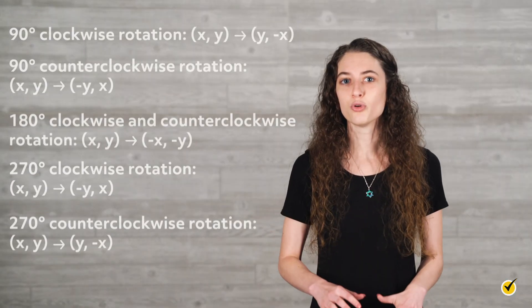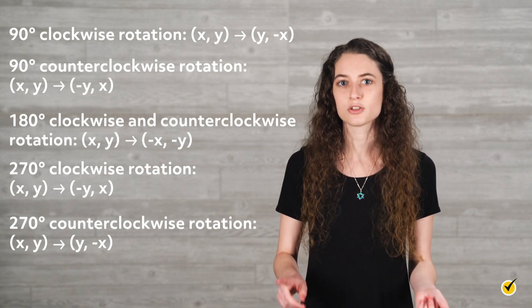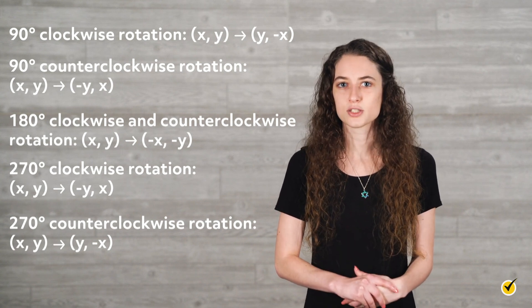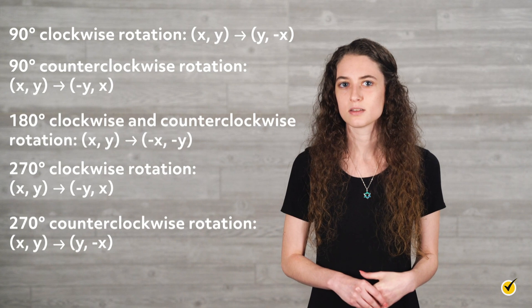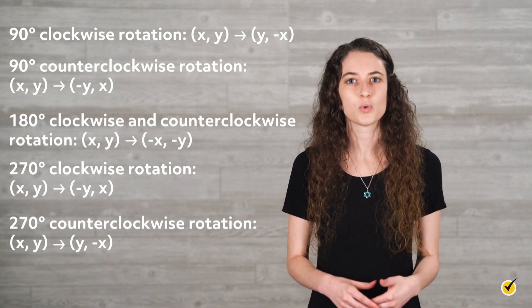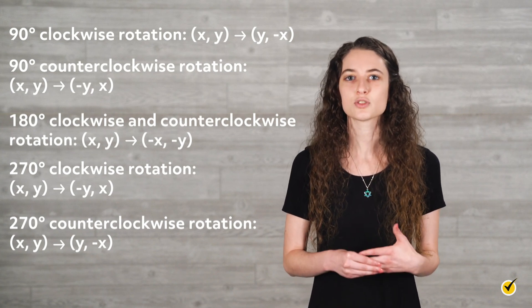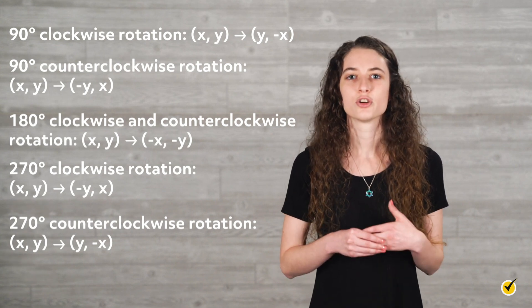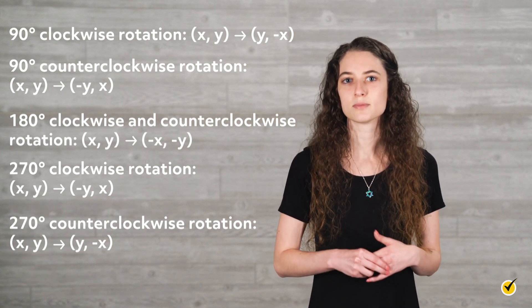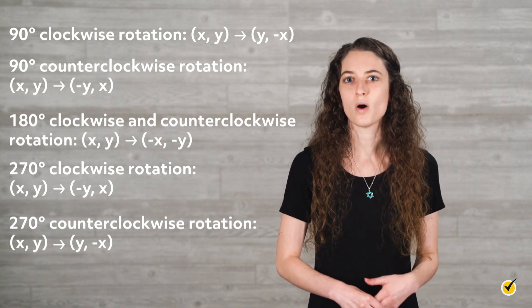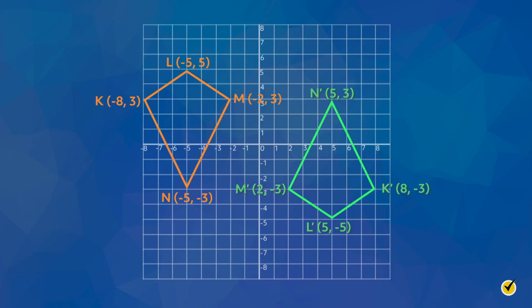Let's look at the rules. The only rule where the values of x and y don't switch but their sign changes is the 180 degree rotation. For a 90 degree clockwise rotation, (x, y) becomes (y, -x). For a 90 degree counterclockwise rotation, (x, y) becomes (-y, x). For a 180 degree clockwise and counterclockwise rotation, (x, y) becomes (-x, -y). For a 270 degree clockwise rotation, (x, y) becomes (-y, x). And for a 270 degree counterclockwise rotation, (x, y) becomes (y, -x). Therefore, kite KLMN was rotated 180 degrees about the origin to create kite K'L'M'N'.